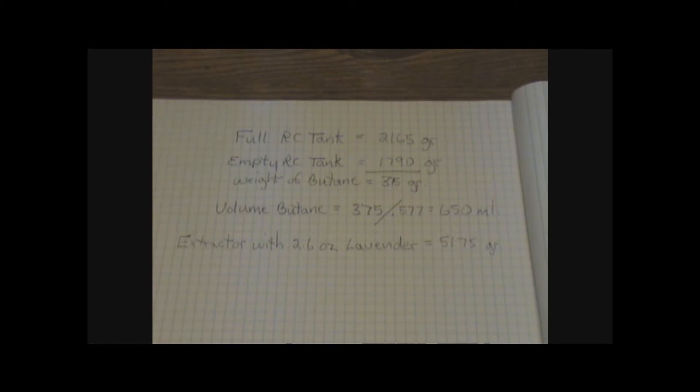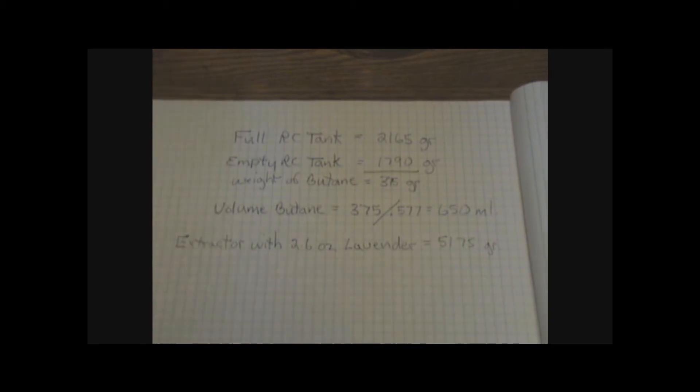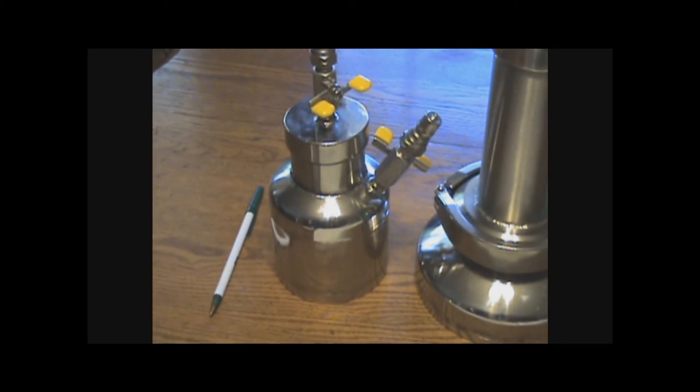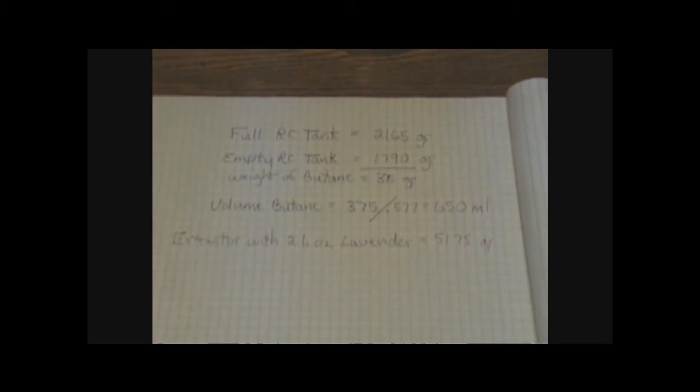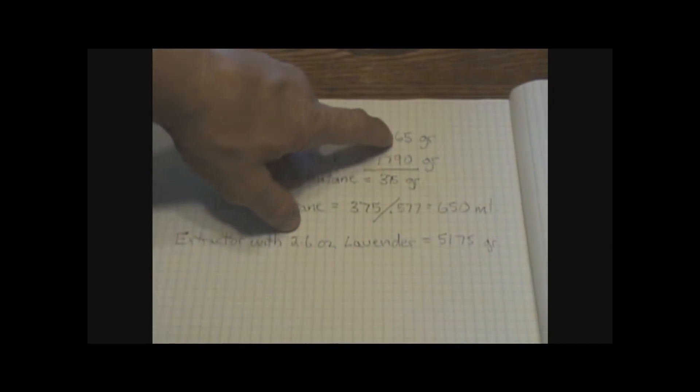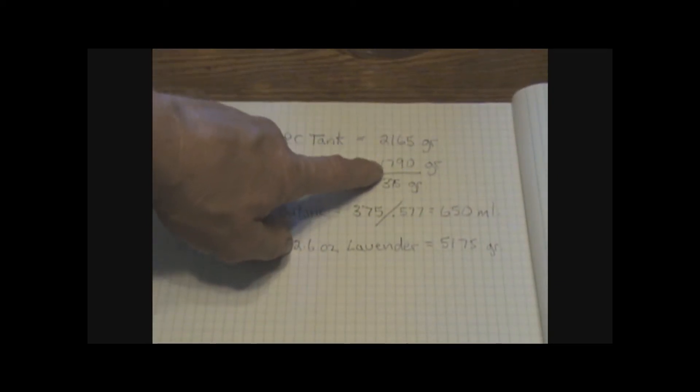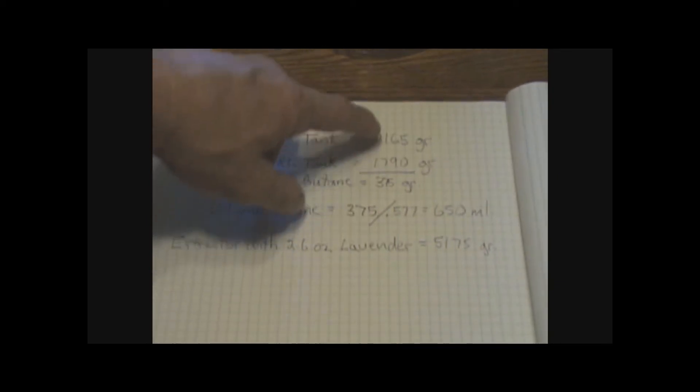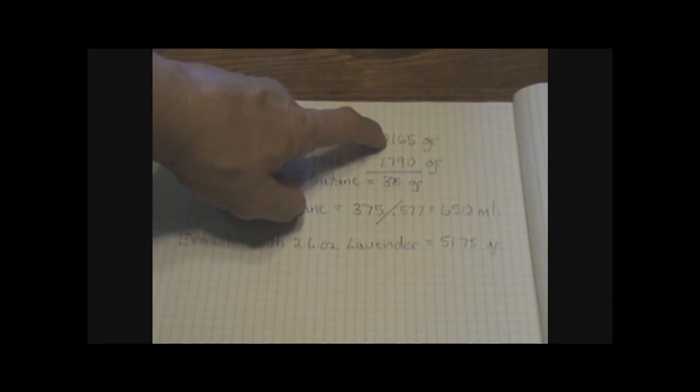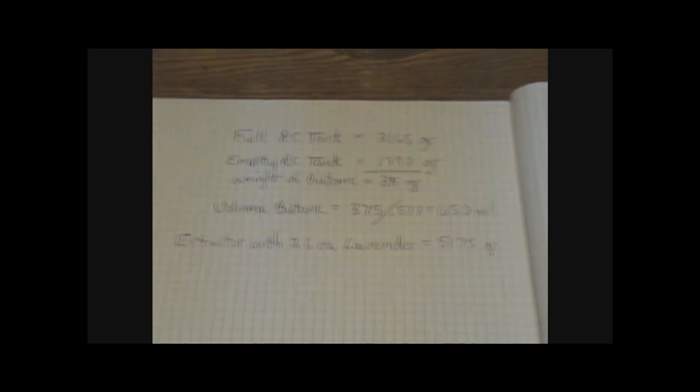I like to take notes on my weights and my volumes and everybody should do that if they want to be safe. So what we have here is a full tank. This one. And it's been filled with butane. And the amount of butane that I filled it with brought the weight up to 2165 from an empty weight of 1790. 1790 from 2165 equals 375 grams. So that's the amount of butane that I have in here by gram weight.